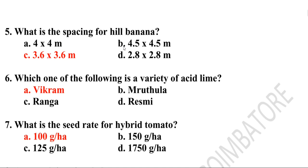Sixth question: Which one of the following is a variety of acid lime — Bikram, Brudula, Ranga, or Reshmi? The correct answer is Bikram. It is an off-season variety with a bunch bearing habit. Seventh question: What is the seed rate for hybrid tomato? The answer is 100 grams per hectare.